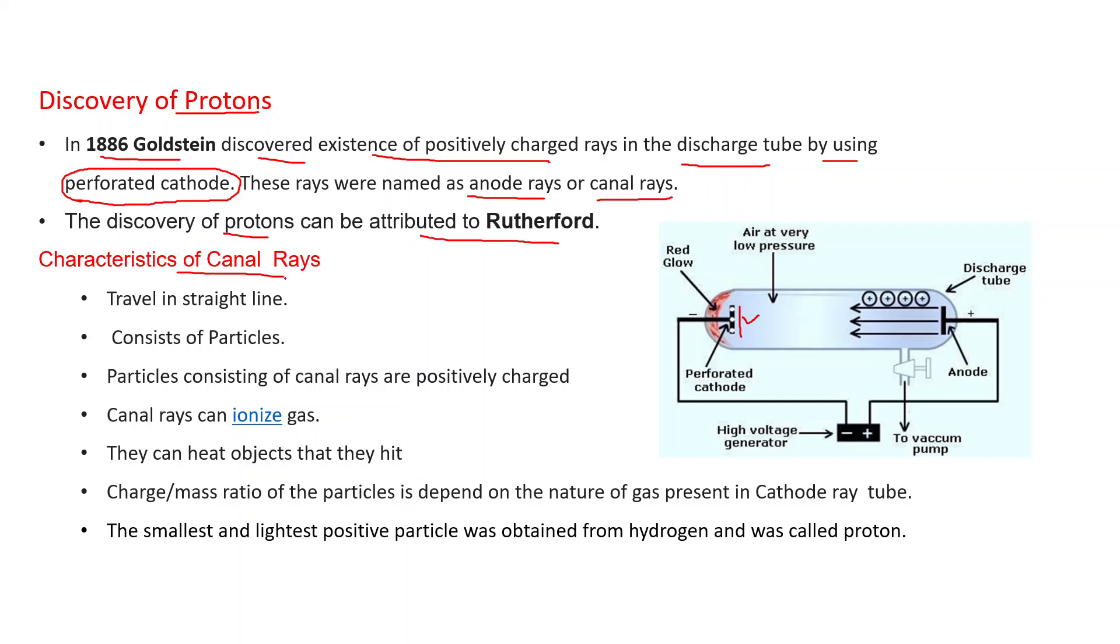What are the characteristics of canal rays? Travel in straight line. If we place a opaque object between the path of these canal rays, they cast the shadow. It indicates that they travel in a straight line. Consist of particles. If light wheel is placed between the path of canal rays, it starts to rotate. It indicates that these rays consist of particles. Particles consisting of canal rays are positively charged. If we apply the electric field, then these rays deviate towards the negative plate. It indicates that particles consisting of canal rays are positively charged. Canal rays can ionize gas. They can heat objects that they heat. The heating effect is observed.